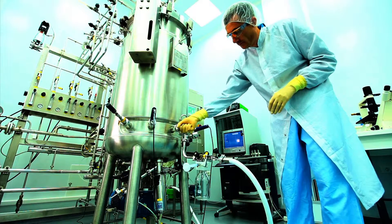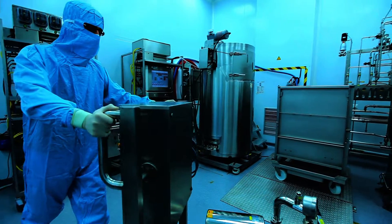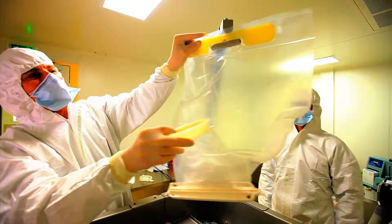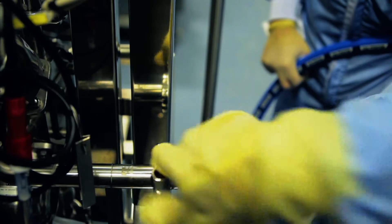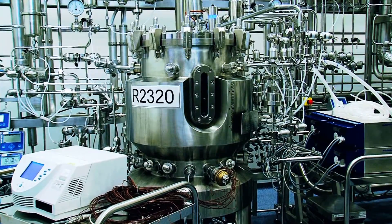With its versatile technologies, Mablaunch can undertake GMP cell banking and production of biopharmaceuticals from Phase 1 to Phase 3 clinical trials, and small to large-scale commercial supplies to meet customer needs.